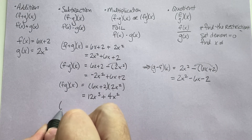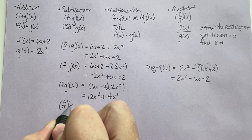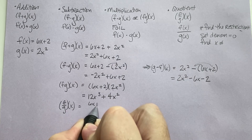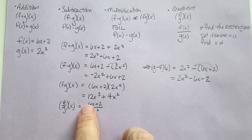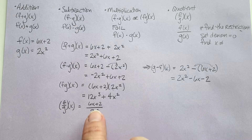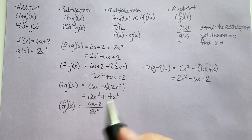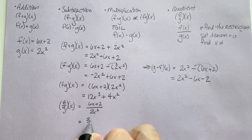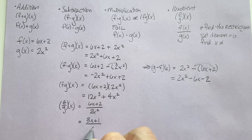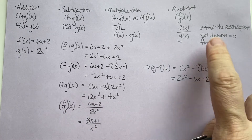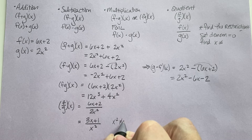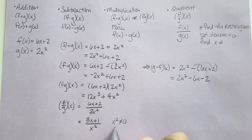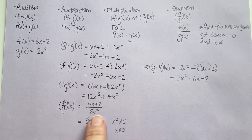Now division: (6x plus 2) over 2x squared. First, check if anything can reduce — and it can, because everything is divisible by 2. So we get (3x plus 1) over x squared. Don't forget, we have to find our restriction. x squared cannot equal 0; square root both sides, so x cannot equal 0. That is our answer.